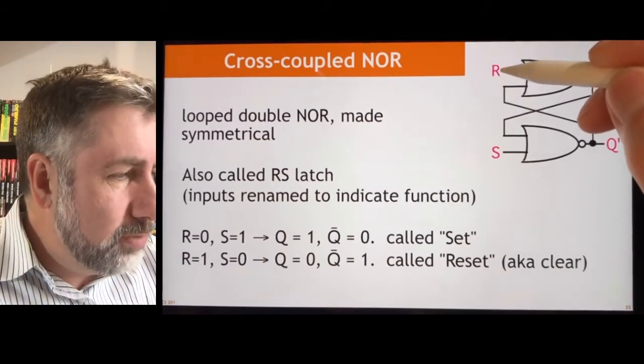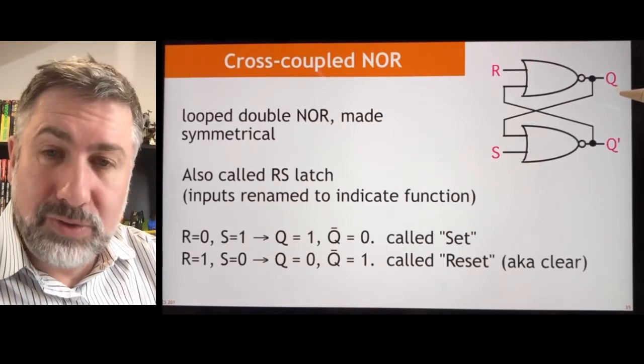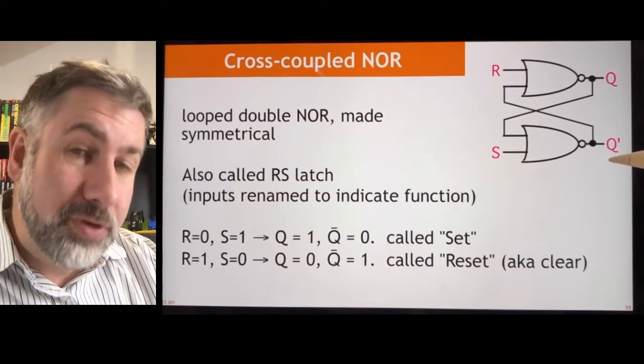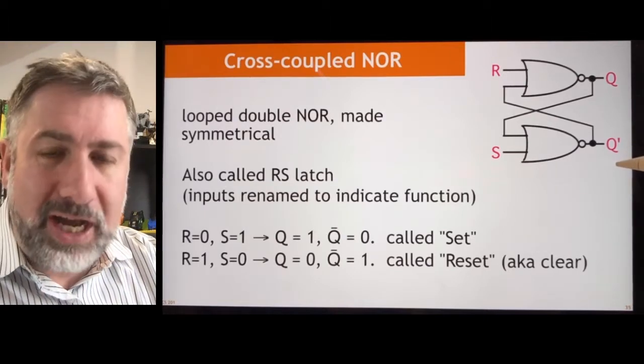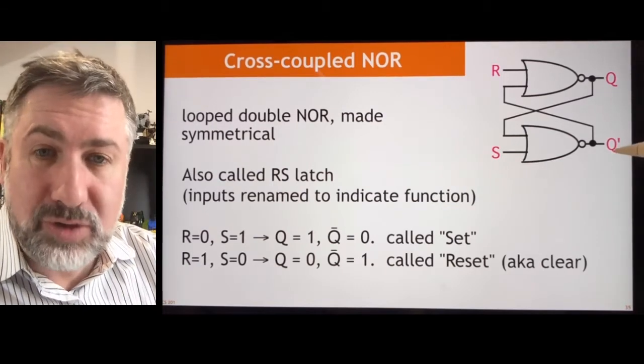I'm going to call this input R, this input S, this output Q. Q is going to be the state of the device. And I'm going to call this output Q prime, which is sort of foreshadowing to indicate to you that these should always be different. And in fact, they will be most of the time.